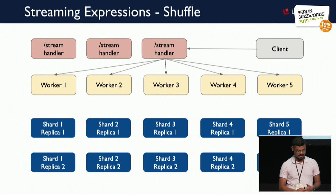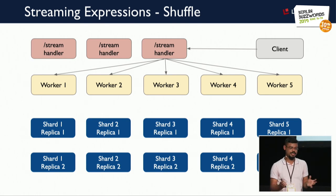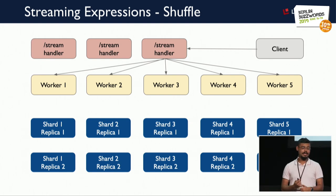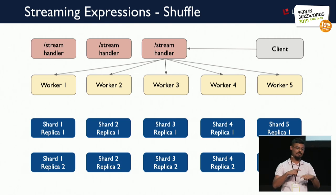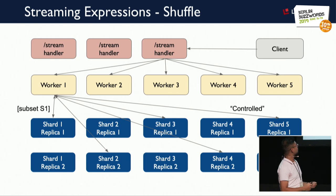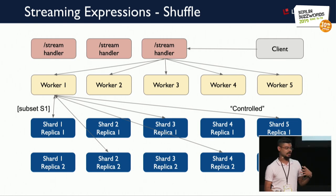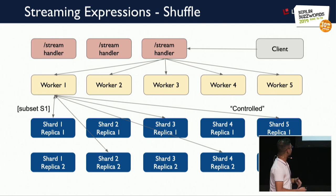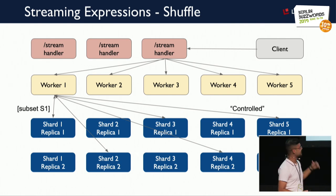There can be use cases where you want to control which data goes to a particular worker — for example, sending all mathematics-related data to worker 1, science-related data to worker 2. This is what I call 'control shuffling': each worker fetches data from each shard, requesting at least one replica per shard, then filters depending on what it wants to work on, creates its own subset S1, performs operations on it, and sends results back to the stream handler.